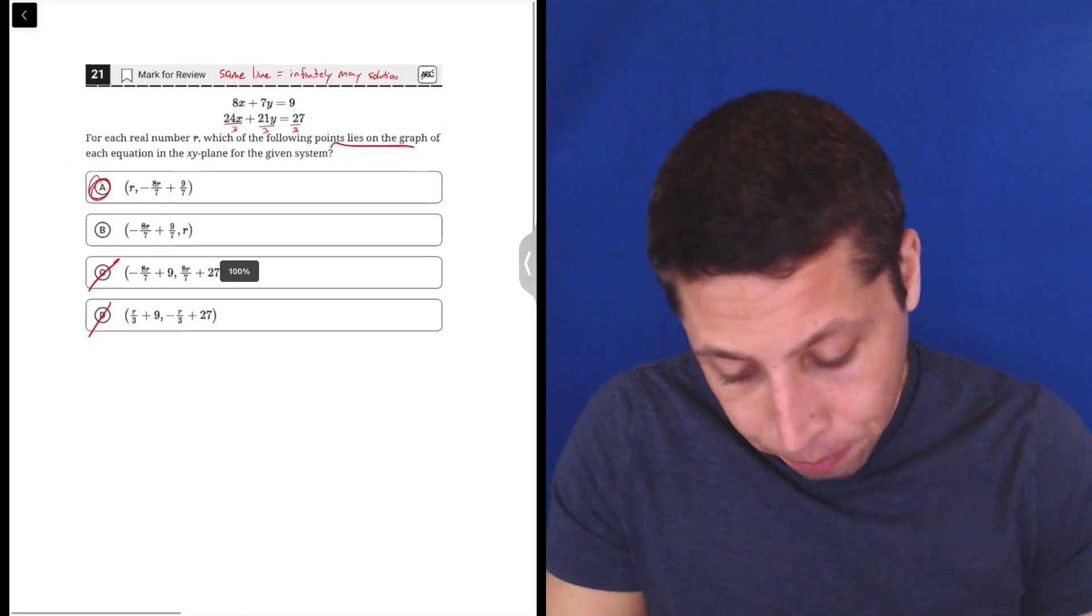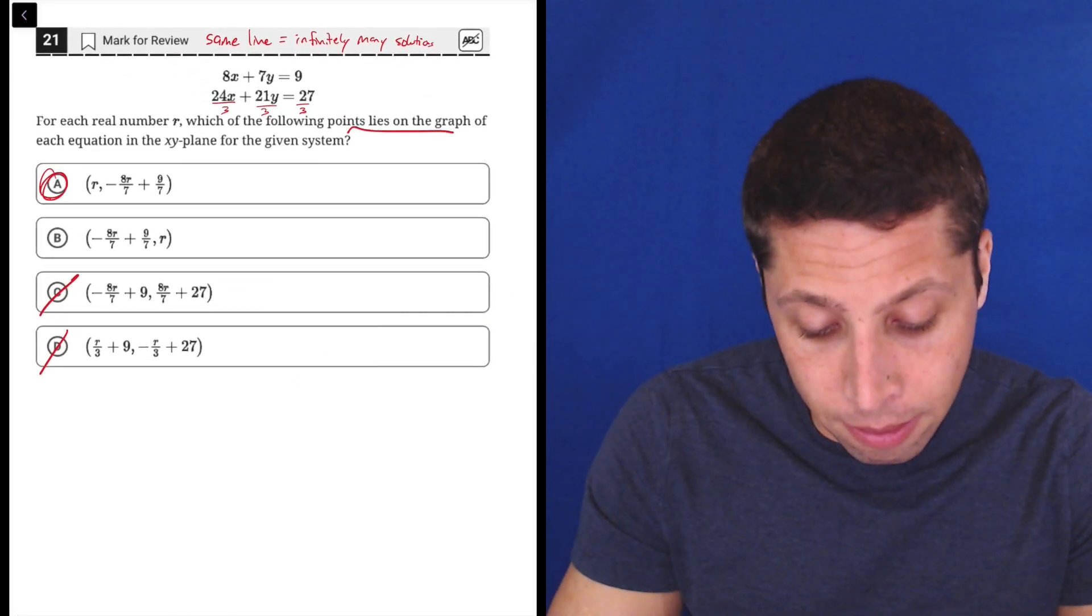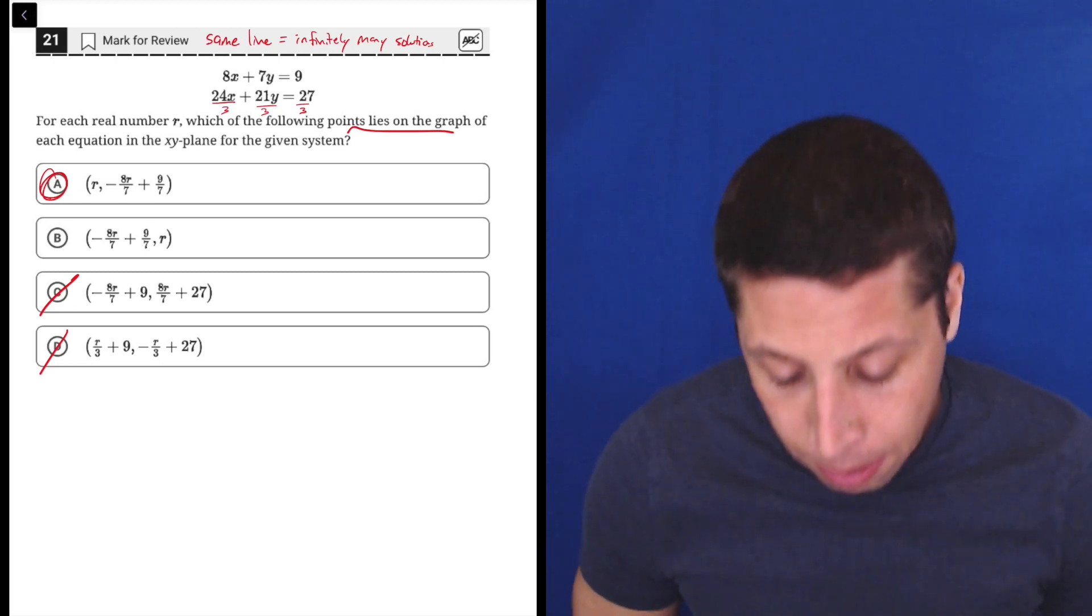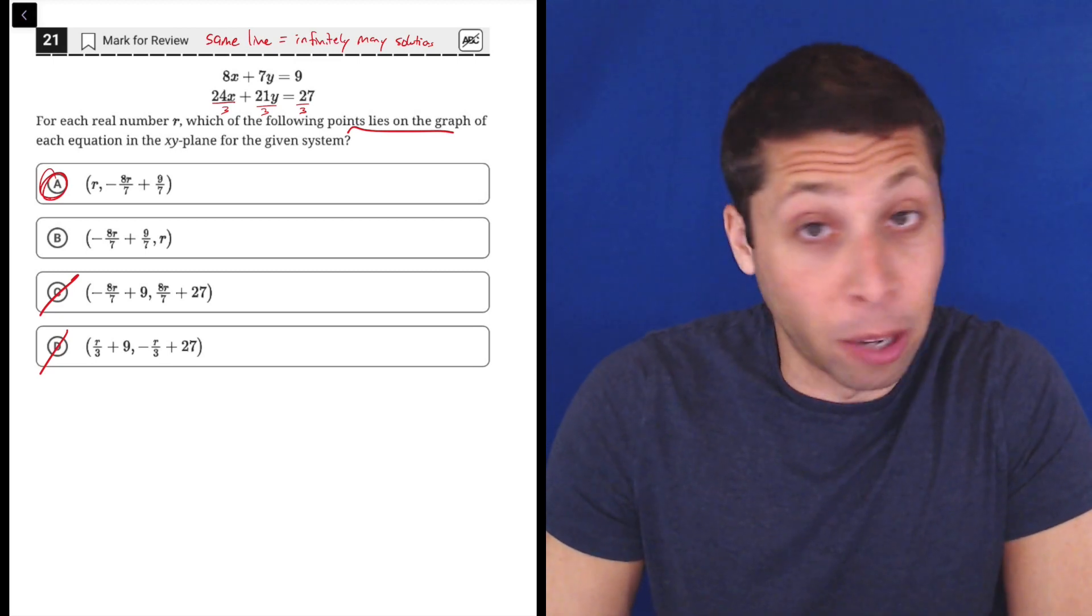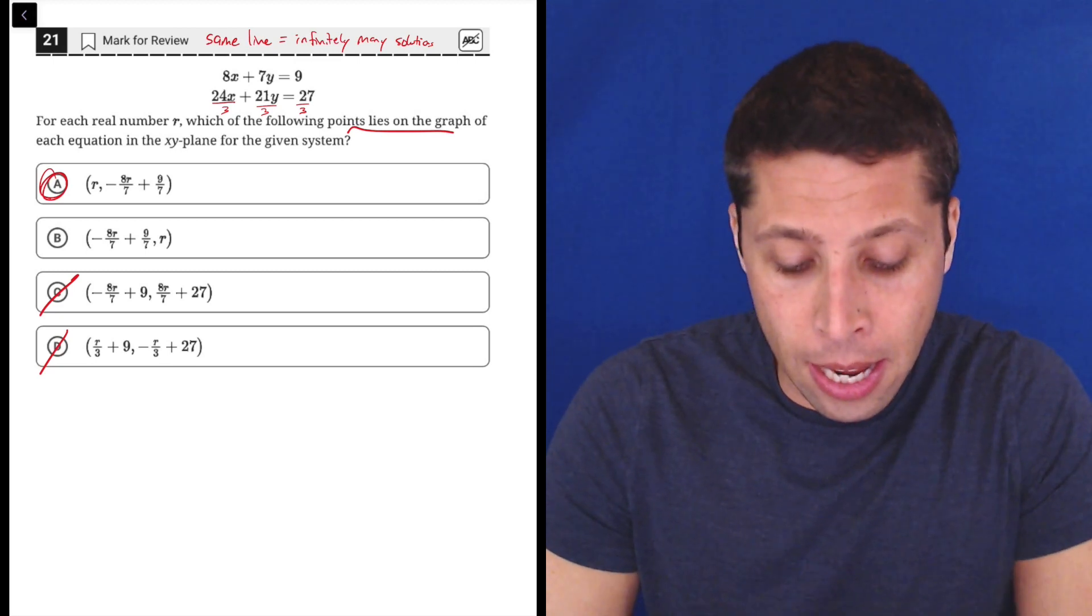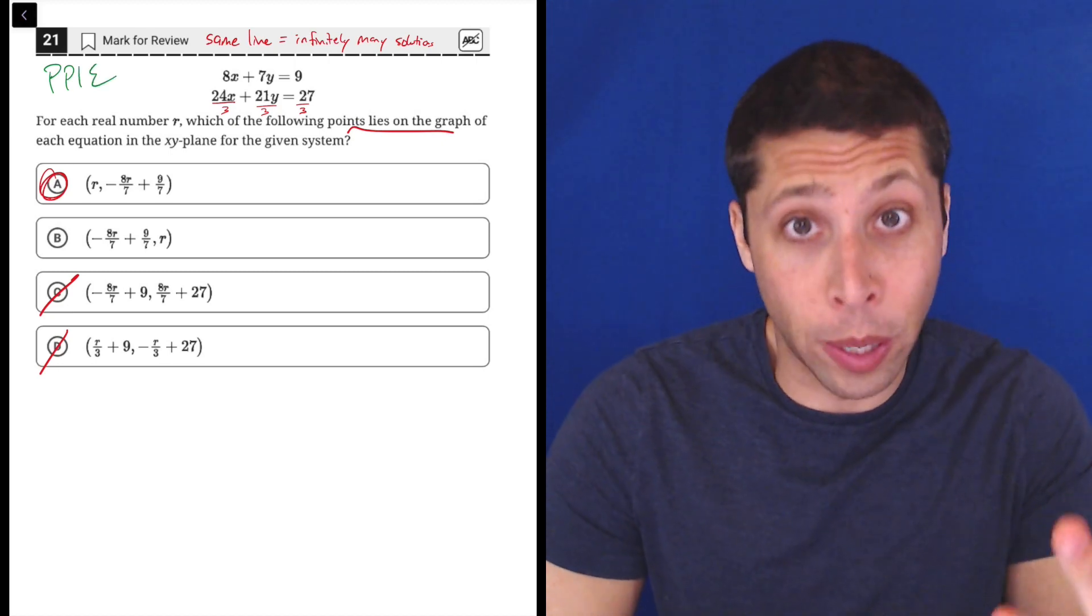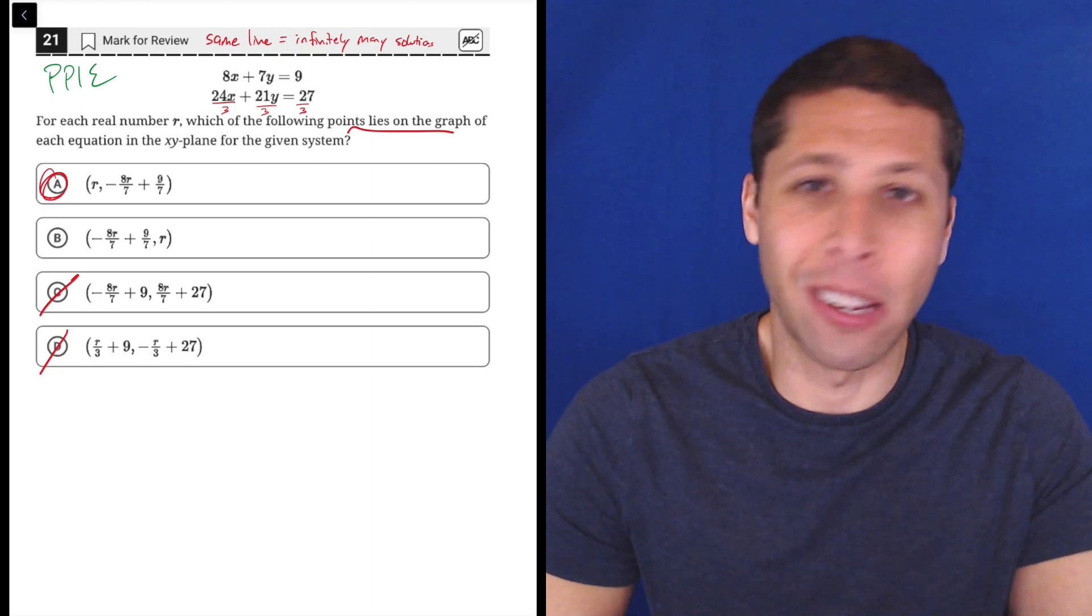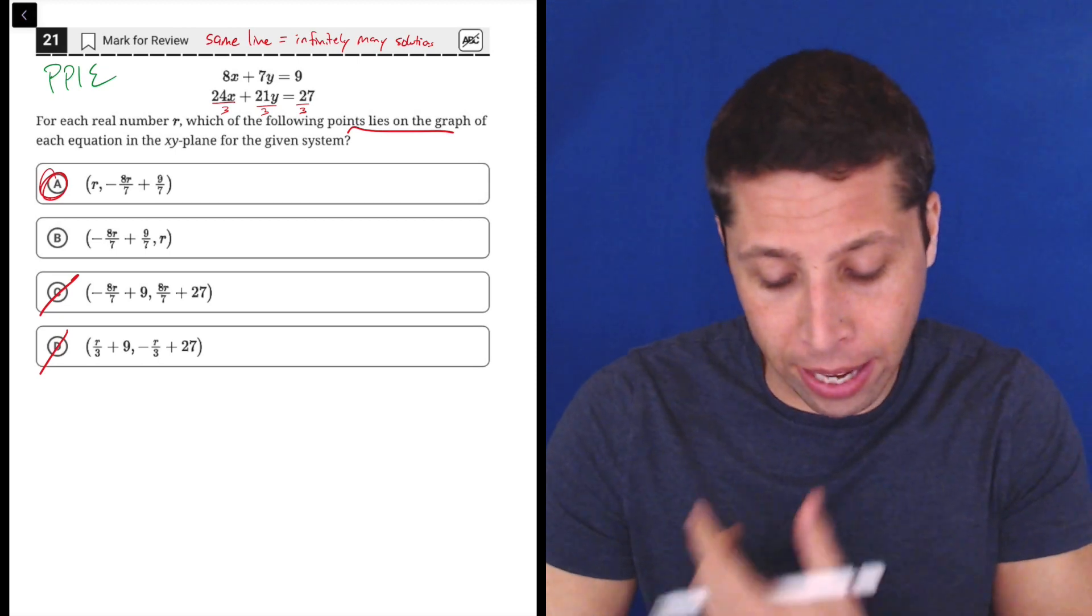But I want to show you another way to do it. I don't know if this is better, but if you're more comfortable with algebra, it might be. Basically at this point, I would still look at these answer choices and be like, oh my God, I don't want to deal with this. This algebra is going to be crazy. But I can follow plug points into equations. I have an equation, I have two equations, and I have a bunch of points. And yeah, there's a bunch of points. They all have R's in them, which is annoying. But it's okay. It's still a point. It's still an X and a Y. I can plug that in.